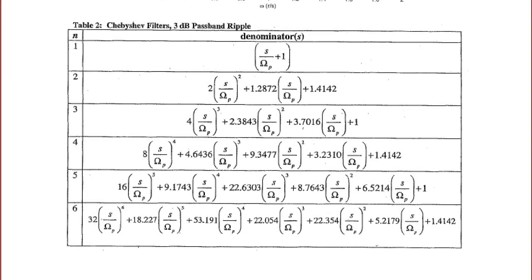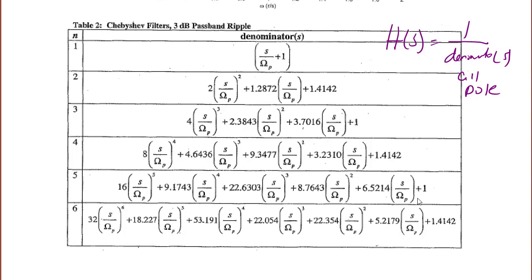Here we have some examples of transfer functions for Chebyshev filters. Just like for Butterworth filters, the order of the filter represents the order of the denominator of the transfer function, which has the form H of S equals 1 over the denominator polynomial in S — so these are all pole filters. The first order denominator is S over sigma P plus 1. Unfortunately, there is no nice pattern like there was for Butterworth filters. For example, for n equals 2, it's 2 times (S over omega P) squared plus 1.2872 times (S over omega P) plus 1.4142.